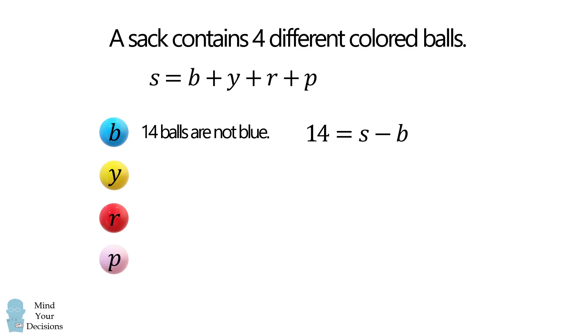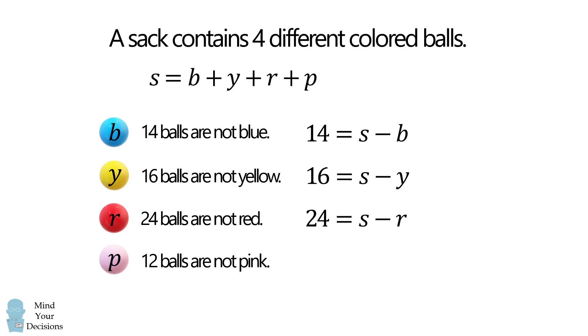That means 14 is equal to s minus b. 16 balls are not yellow. This means 16 is equal to s minus y. 24 balls are not red, which means 24 is equal to s minus r. And finally, 12 balls are not pink. That means 12 is equal to s minus p.